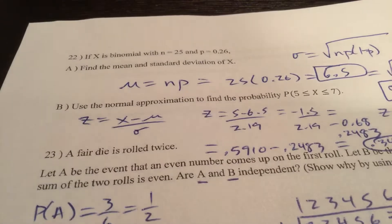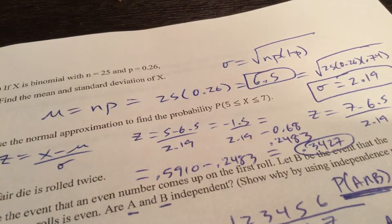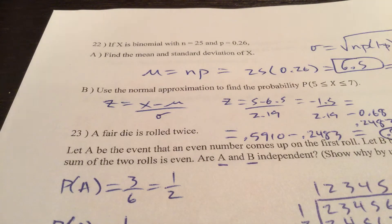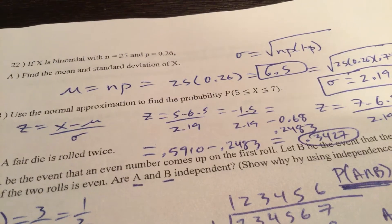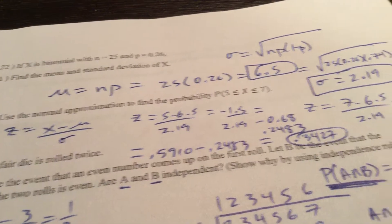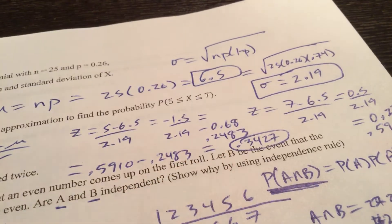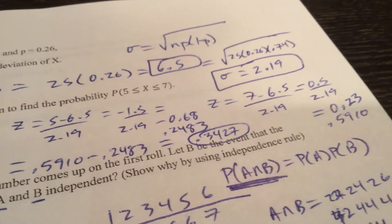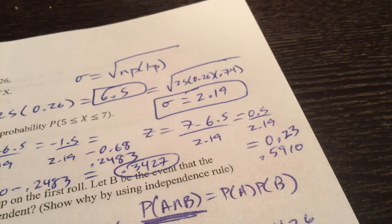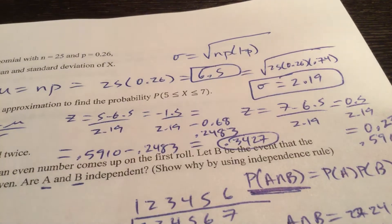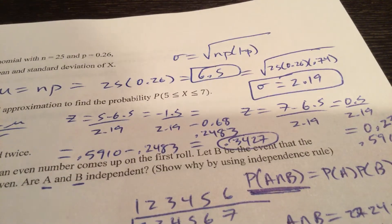Use the normal approximation to find the probability that X is between 5 and 7. So my mean is 6.5. My standard deviation is 2.19. First Z score, negative 0.68. The area to the left of that would be 2483. Then my second Z score, 0.23. The area to the left of that, 5910. Subtract the 2. That's the probability that X is between 5 and 7.